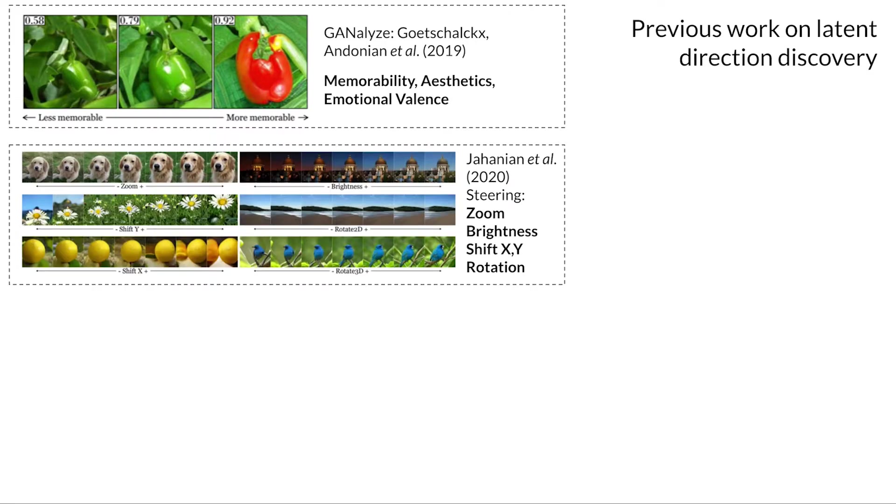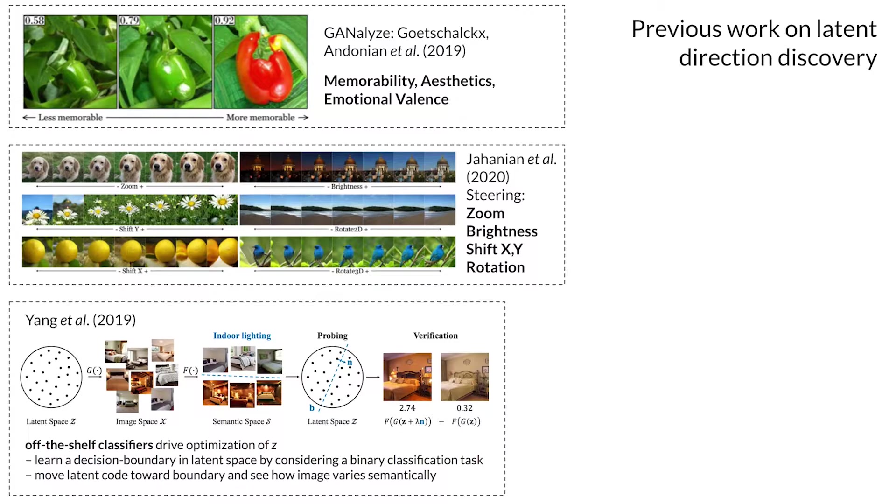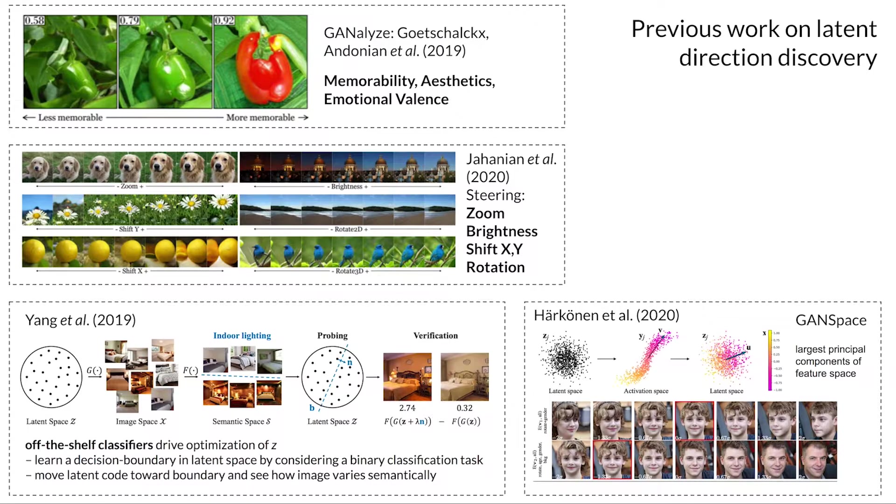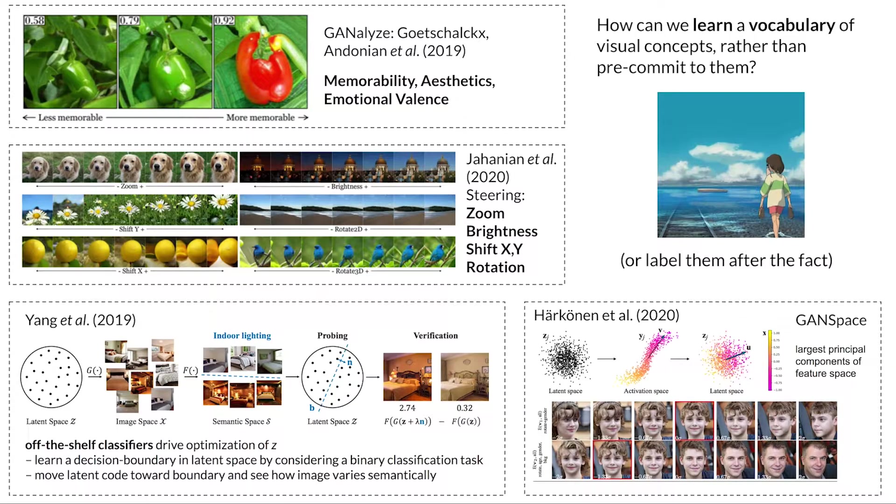Recent investigations of GAN latent space have searched for just a handful of pre-specified features at a time, or have used unsupervised methods to find disentangled dimensions of variation in a model whose salience to human observers is unknown. Here, we are interested in the overlap between the set of concepts a model represents and the set of concepts meaningful to humans in visual scenes. We introduce a method for learning such a shared vocabulary from the bottom up.